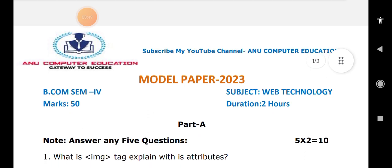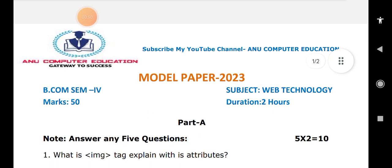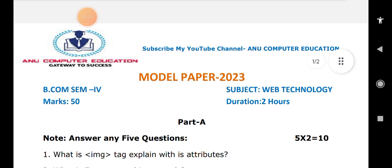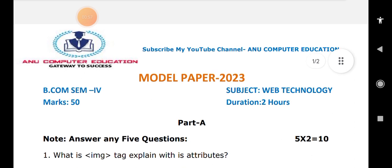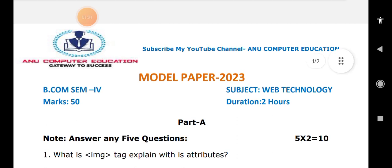In Part A, 8 questions will be given and you have to write any 5 questions. The first question is: what is image tag and explain its attributes? Image tag is used to display an image on the web browser, and that can be done with the image tag. Image tag has so many attributes.